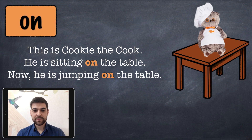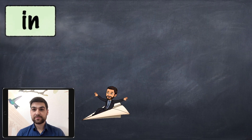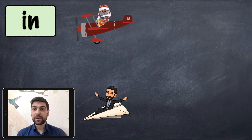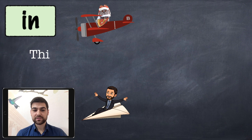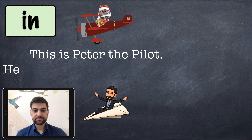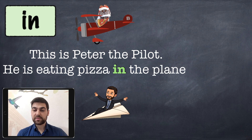Next, 'in.' We can see an airplane and a cat eating pizza. This is Peter the Pilot and he is eating pizza in the plane, because he is inside the plane.